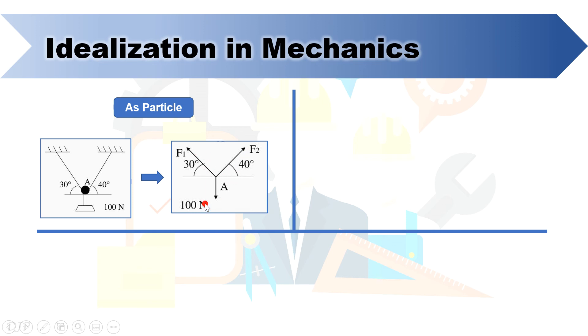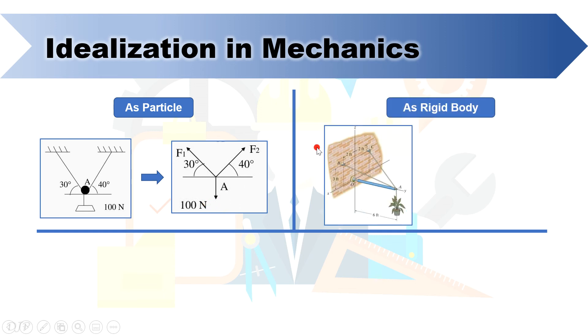Now for rigid body, the system in this figure contains cable wires, these two cable wires, the vase, and the rod OA. This system can be idealized or I mean the rod OA can be idealized as rigid body by just drawing the rod and the forces only.